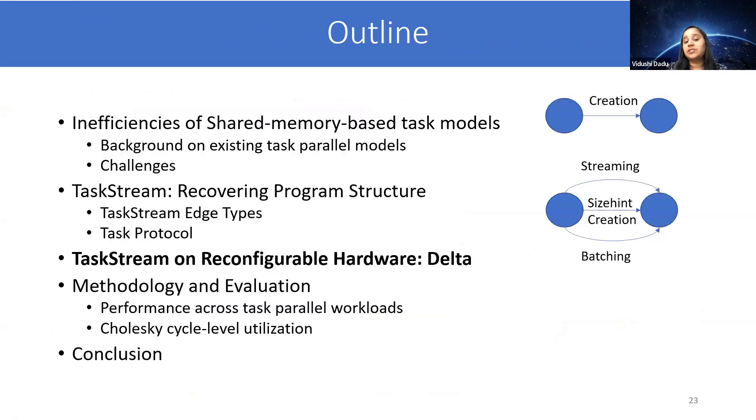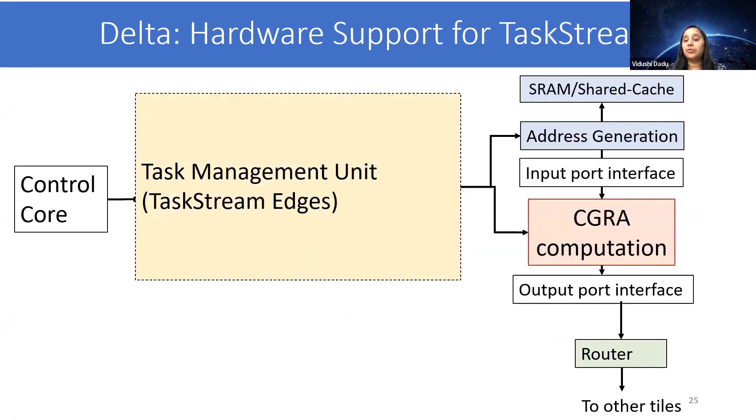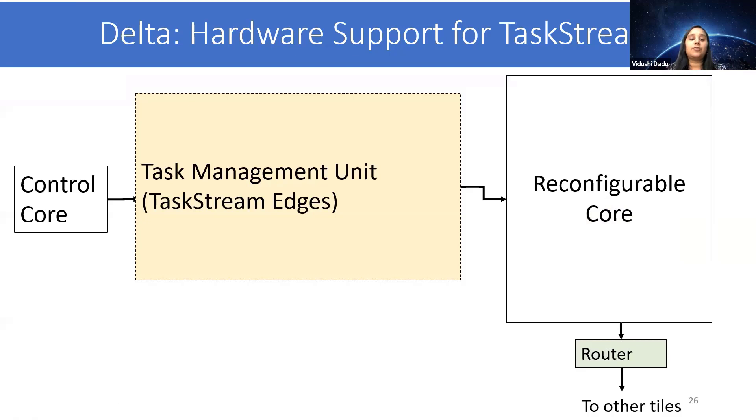So let's move to how do we implement TaskStream on reconfigurable hardware. The first idea is to implement TaskStream as a hierarchical graph, where the TaskStream nodes are implemented as dataflow graphs, which are a combination of compute and memory nodes connected by the dependence edges. In terms of hardware also, we start with a traditional hardware known to work well for the dataflow execution model, and then extend it for our TaskStream model. So here there is a decoupled computation hardware for CGRA computation and address generation hardware, which are connected by the port interfaces. Originally, without tasks, the control code would be responsible for assigning work to the computation and memory. However, now work may be created dynamically, and that will be handled by this task management unit. We also have a router because it's a multi-core hardware connected by mesh. From now on, we will abstract this reconfigurable core and only focus on the task management unit.